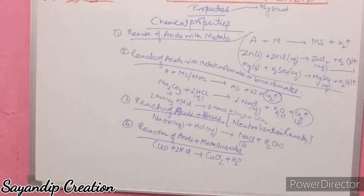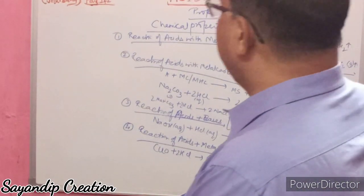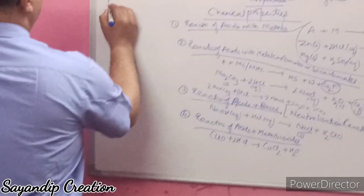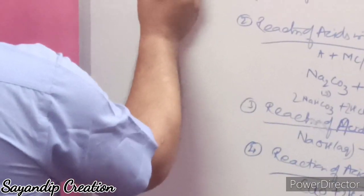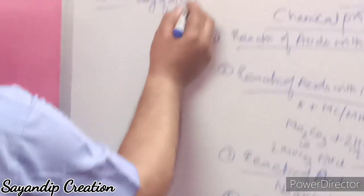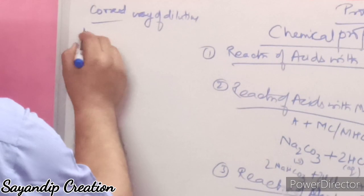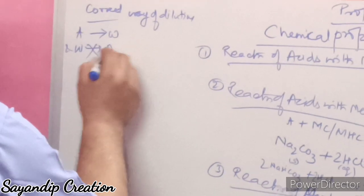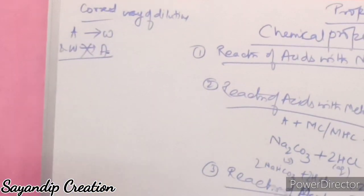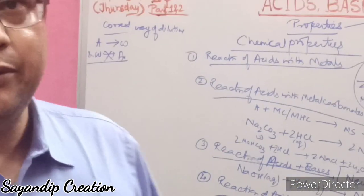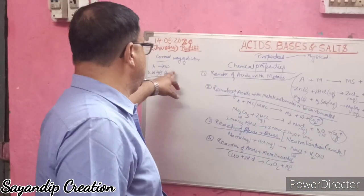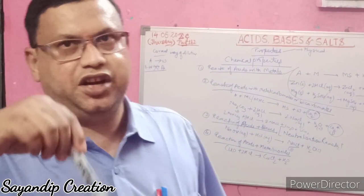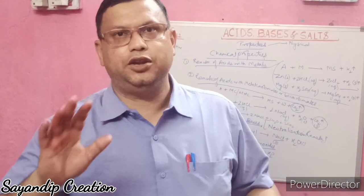Now, what is the correct way of diluting an acid? Many of you don't know the correct method. The correct way is: add acid to water, and NOT water to acid. If you add water to acid, it will splash out and can damage your eyes. When adding acid to water, you should continuously and slowly stir so that the heat generated is evenly distributed and you get the dilute form.